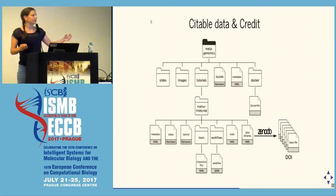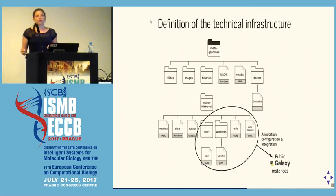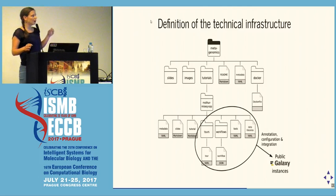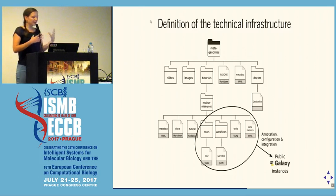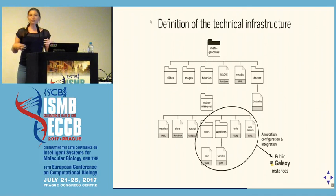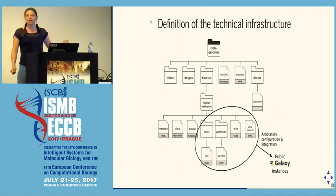We also give credit to contributors by adding this information in the metadata, so for each tutorial you can see who contributed. Another important aspect is the technical infrastructure — which tools you need to run a tutorial. Each tutorial comes with a YAML file describing which tools and which versions are needed to run it on a Galaxy instance. We also have workflows, and we use these YAML and JSON files to annotate public Galaxy instances and indicate which tutorials they can run. We also have scripts to help administrators install all needed tools and data on their Galaxy instance.